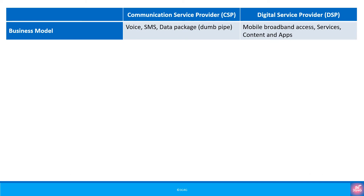Let's do a quick comparison between a CSP and a DSP. With the CSP, the business model is what we call the dumb pipe approach, wherein you will get a voice, SMS and data package. In the case of DSP, you will instead get mobile broadband access, services, content and apps. This may sound the same, but we will differentiate before the end of the video.